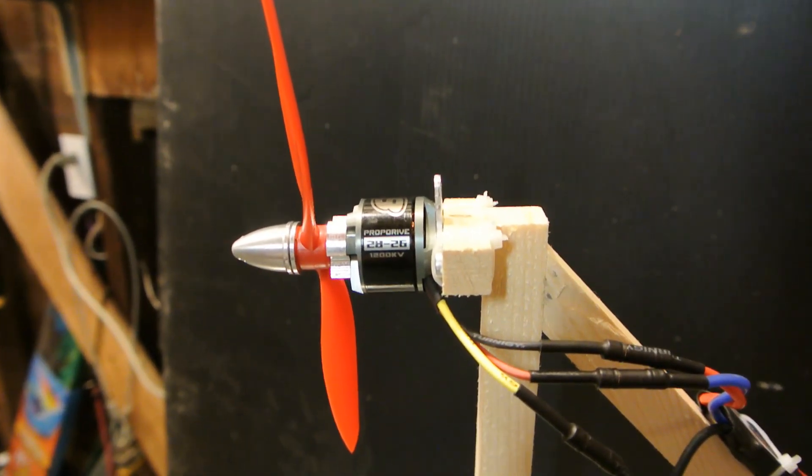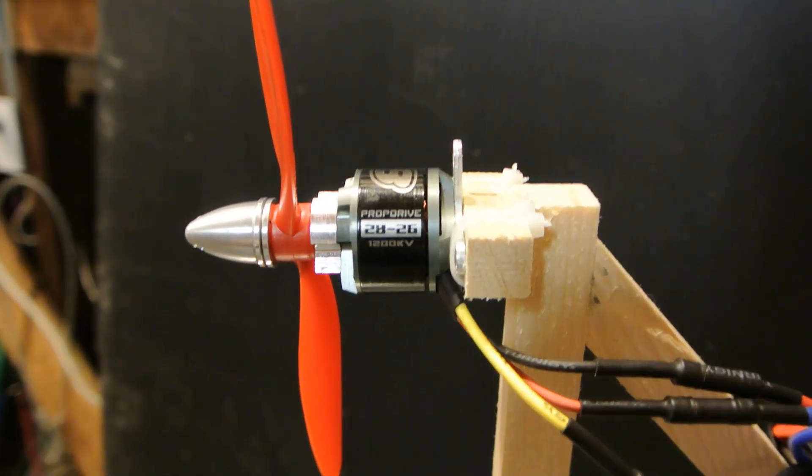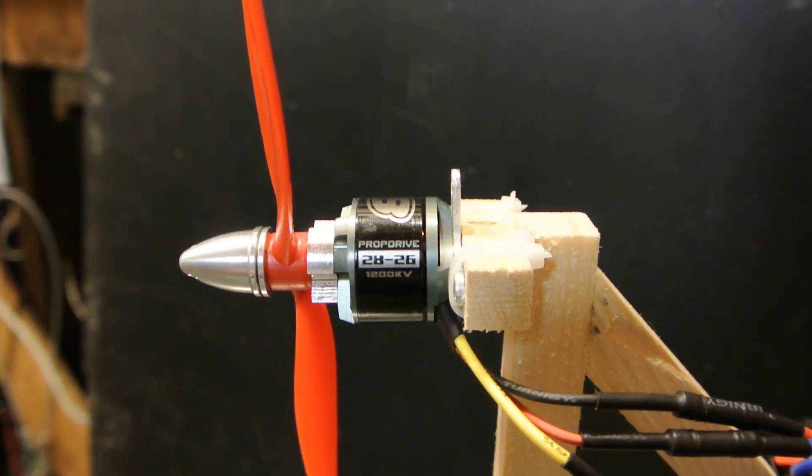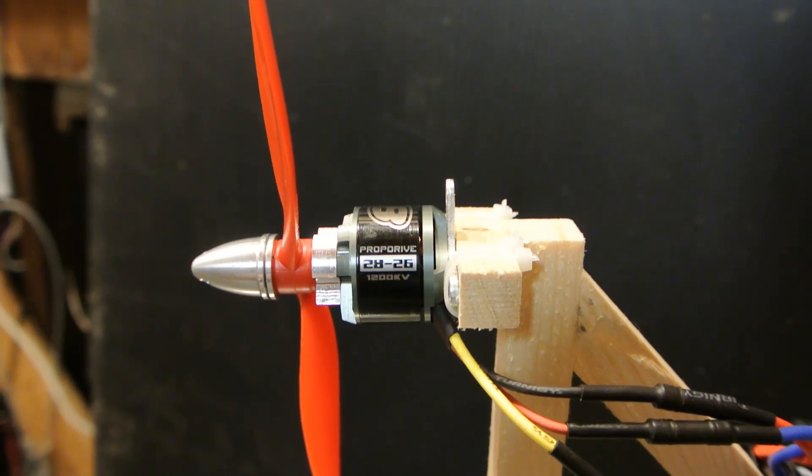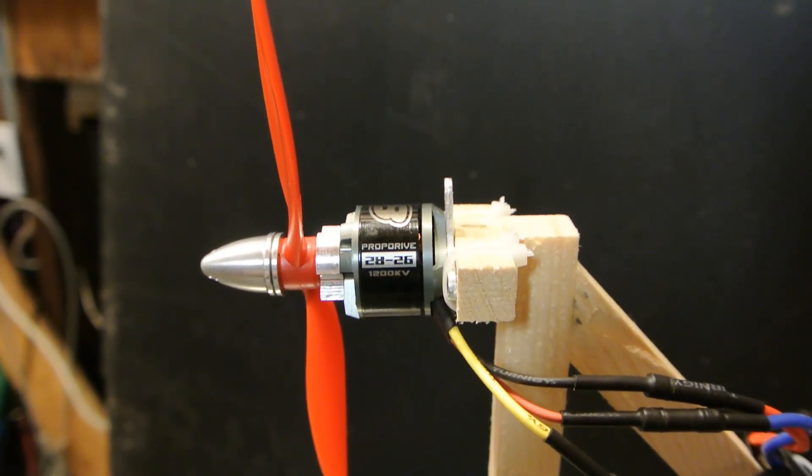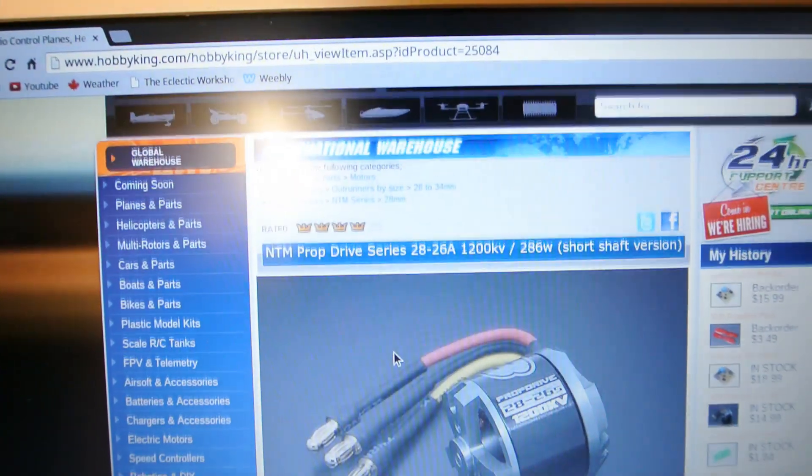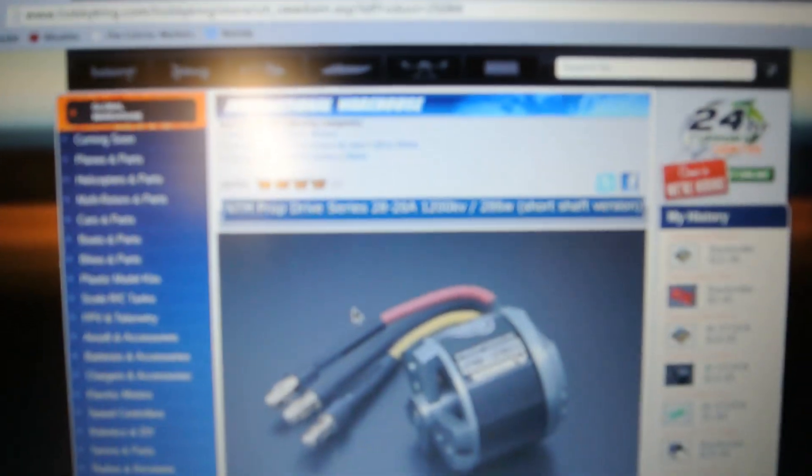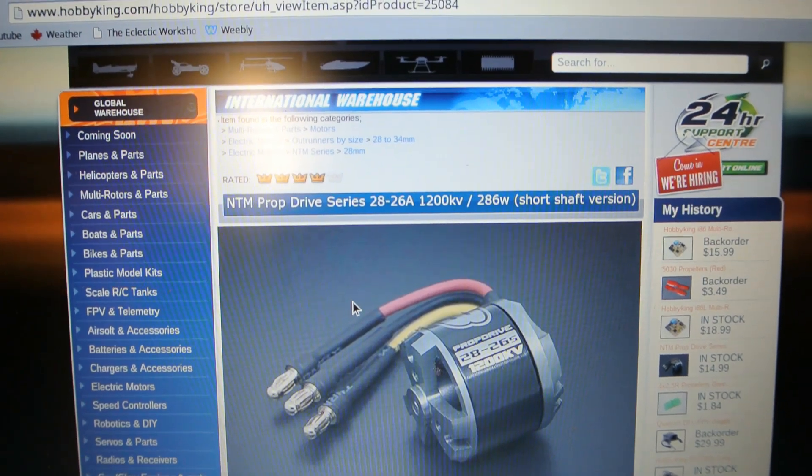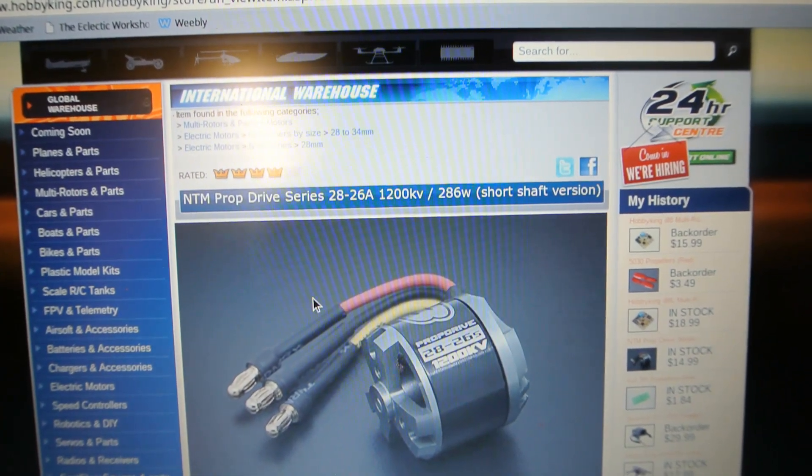Okay, so I was curious so I had to go look up this motor and check the specs, because when I was originally speccing this motor out I thought I could run it on a 4S with a 20 amp ESC. Now maybe my prop pitch is a little too high. So I looked it up. As you can see, I'm on the Hobby King website. It's the NTM Prop Drive 28-26A 1200 kV, 286 watts.